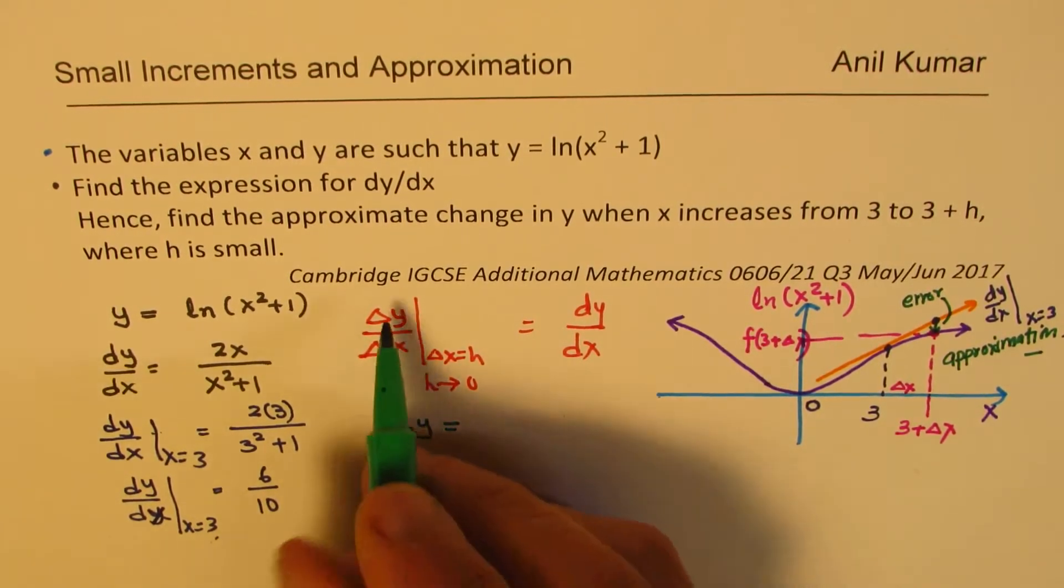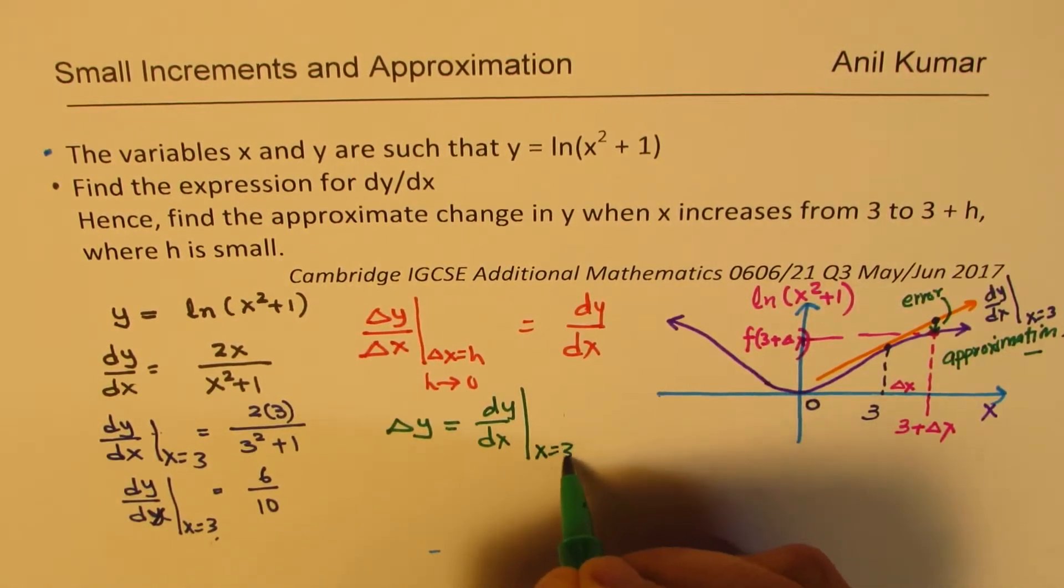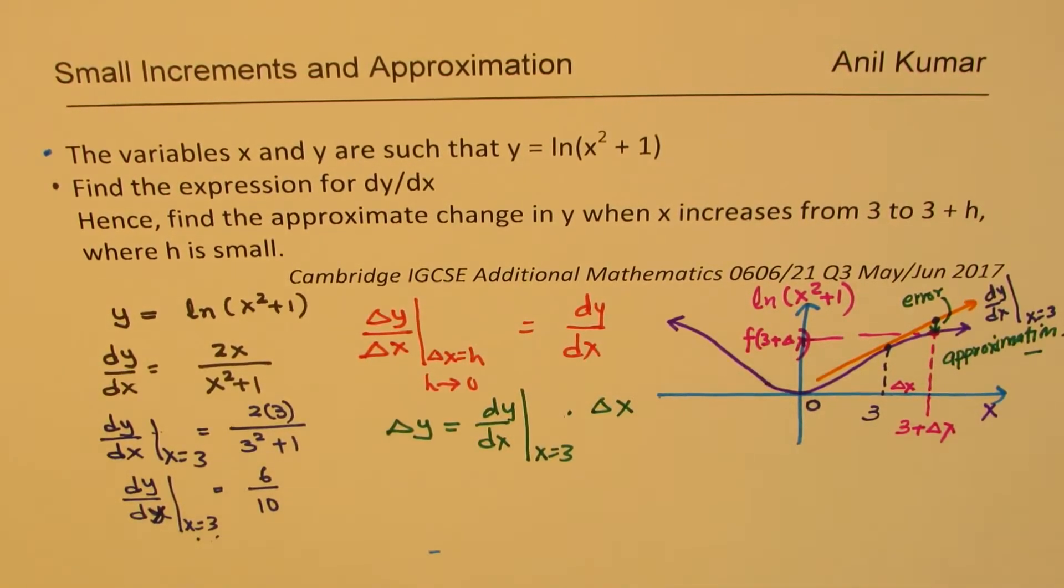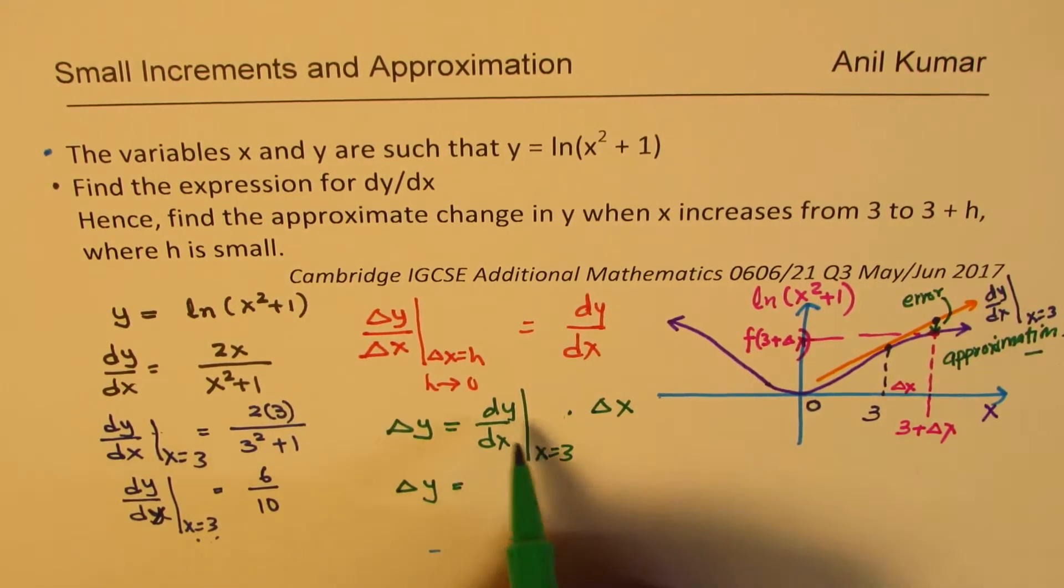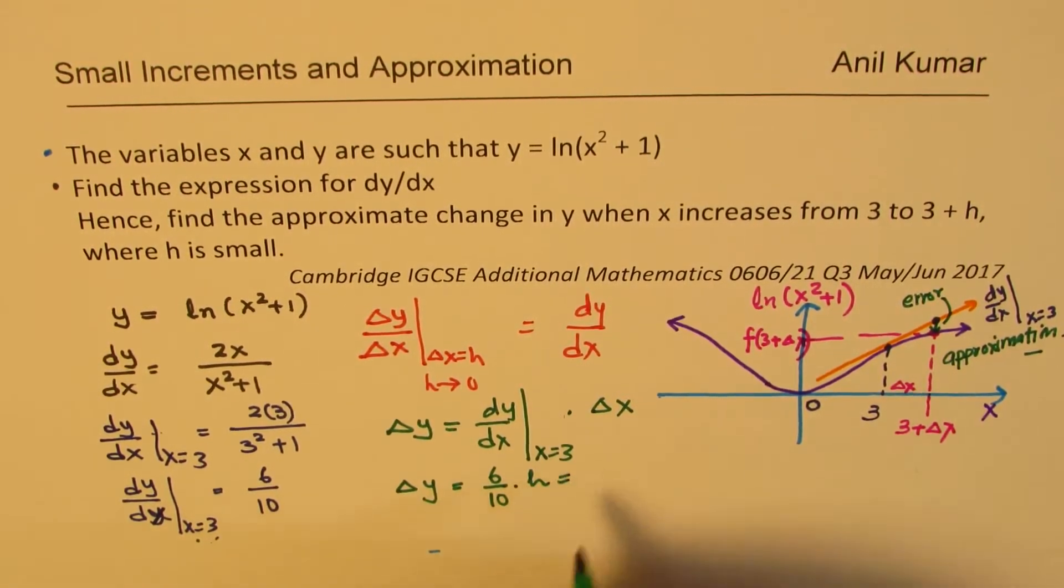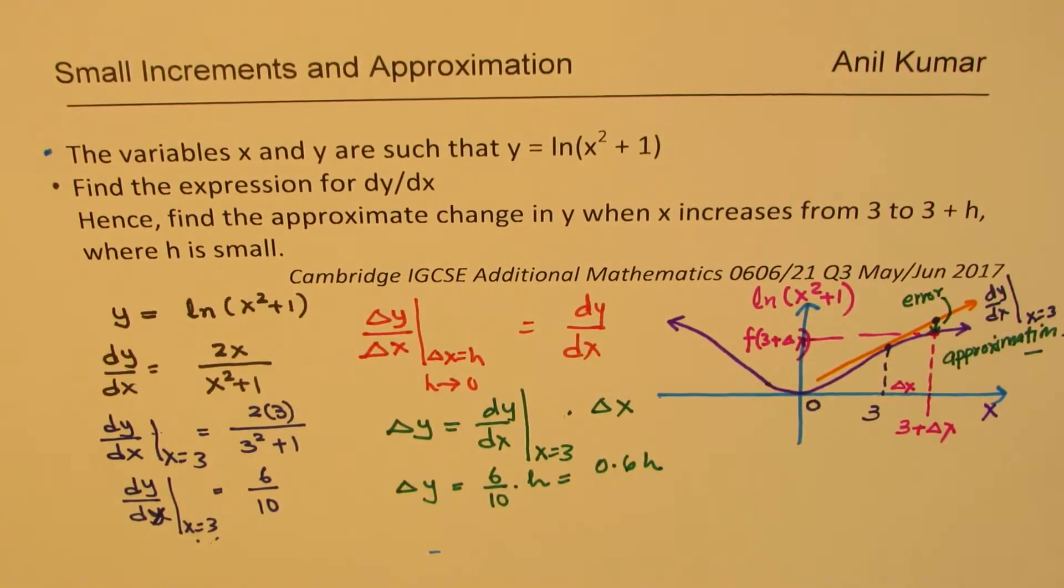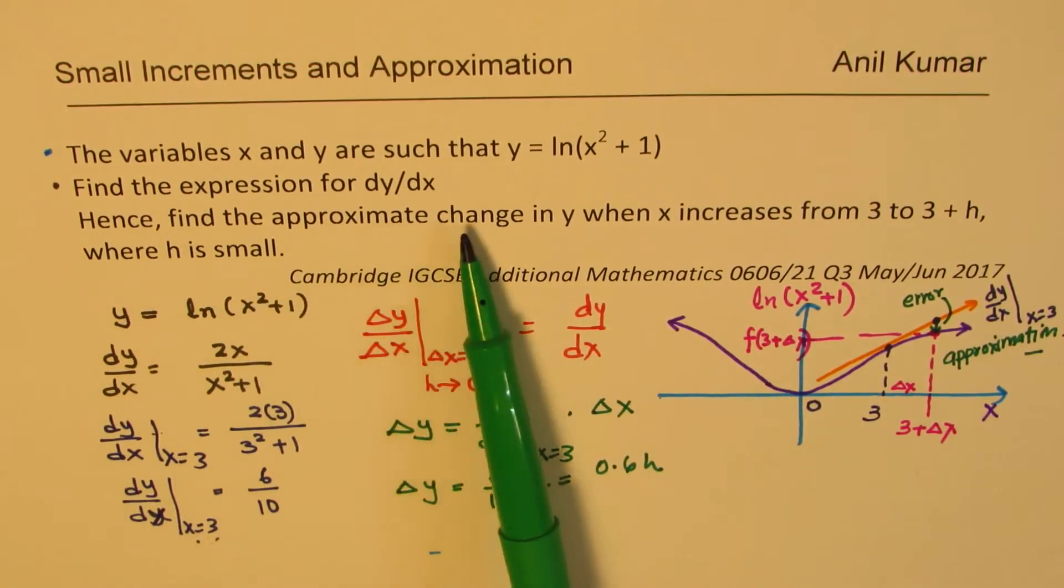Since there is an error, we are calling this as an approximation calculation. When we are trying to figure out the change in y, we say let the change in y be dy/dx at x equals 3 times that delta x.